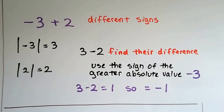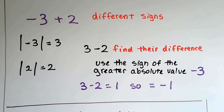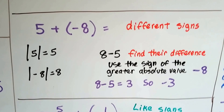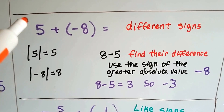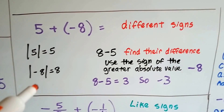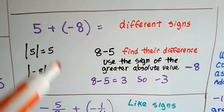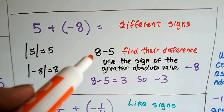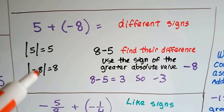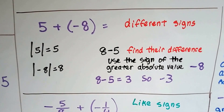You find the difference when the signs are different, and take the bigger absolute value — different difference absolutely. Let's try: 5 plus negative 8. They have different signs — positive and negative. The absolute value of 5 is 5, and the absolute value of negative 8 is 8. The difference between 8 and 5 is 3. We take the sign of the greater absolute value, which is negative 8, and give the negative to the 3. The answer is negative 3.